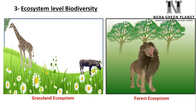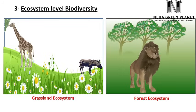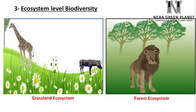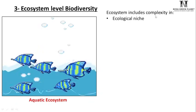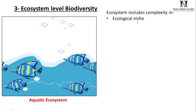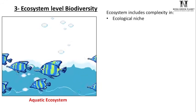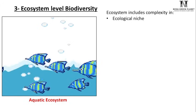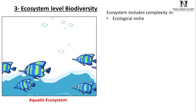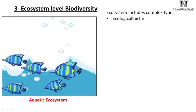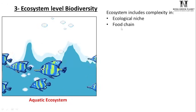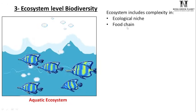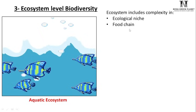Each ecosystem is unique in terms of its biotic and abiotic composition, and also in terms of food chain and food web. Ecosystem-level biodiversity is important because it includes complexity in ecological niche. An ecological niche means the place where an organism lives and what role that organism plays in the ecosystem — for example, the tiger lives in the forest and is a carnivorous species. Each ecosystem has a unique food chain, which differs from ecosystem to ecosystem.